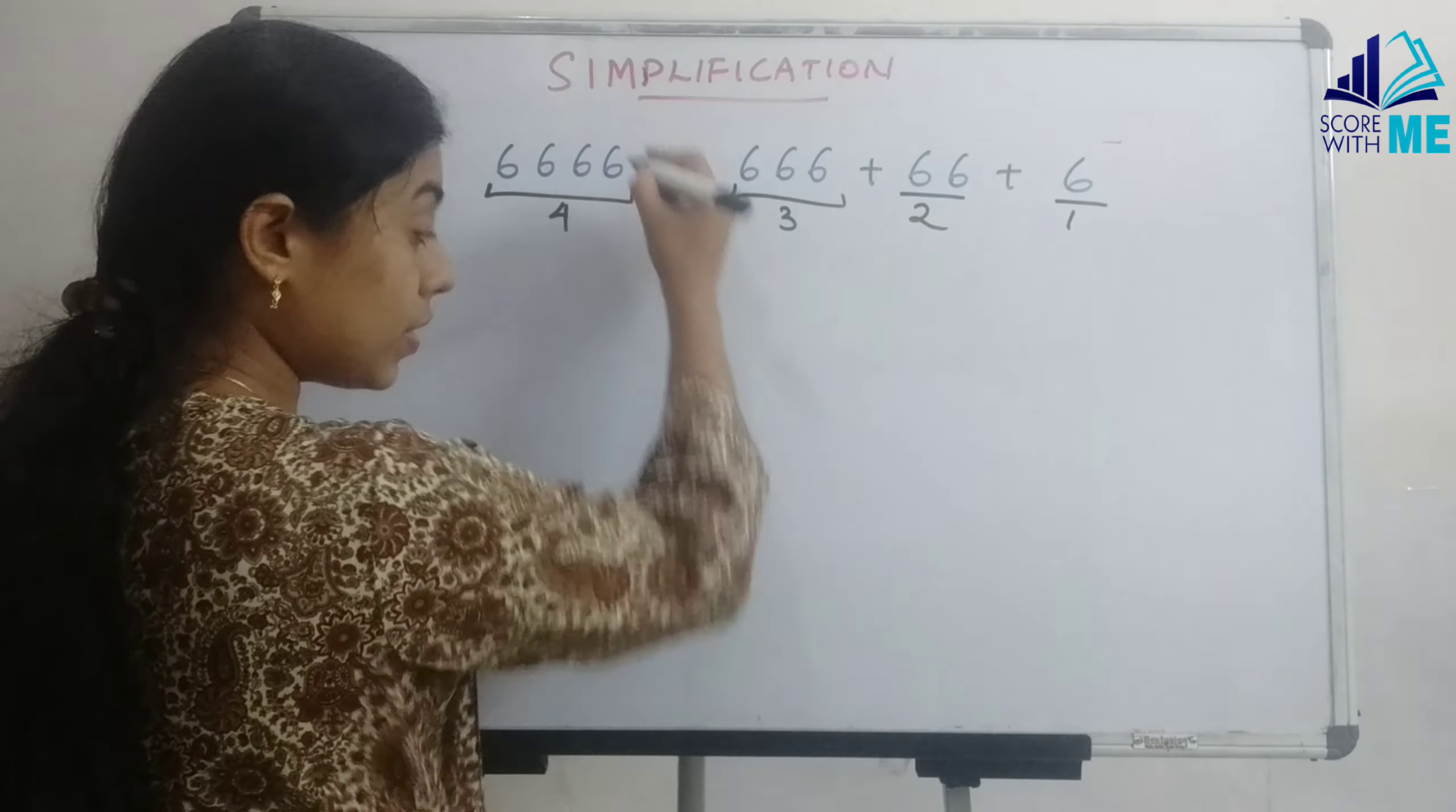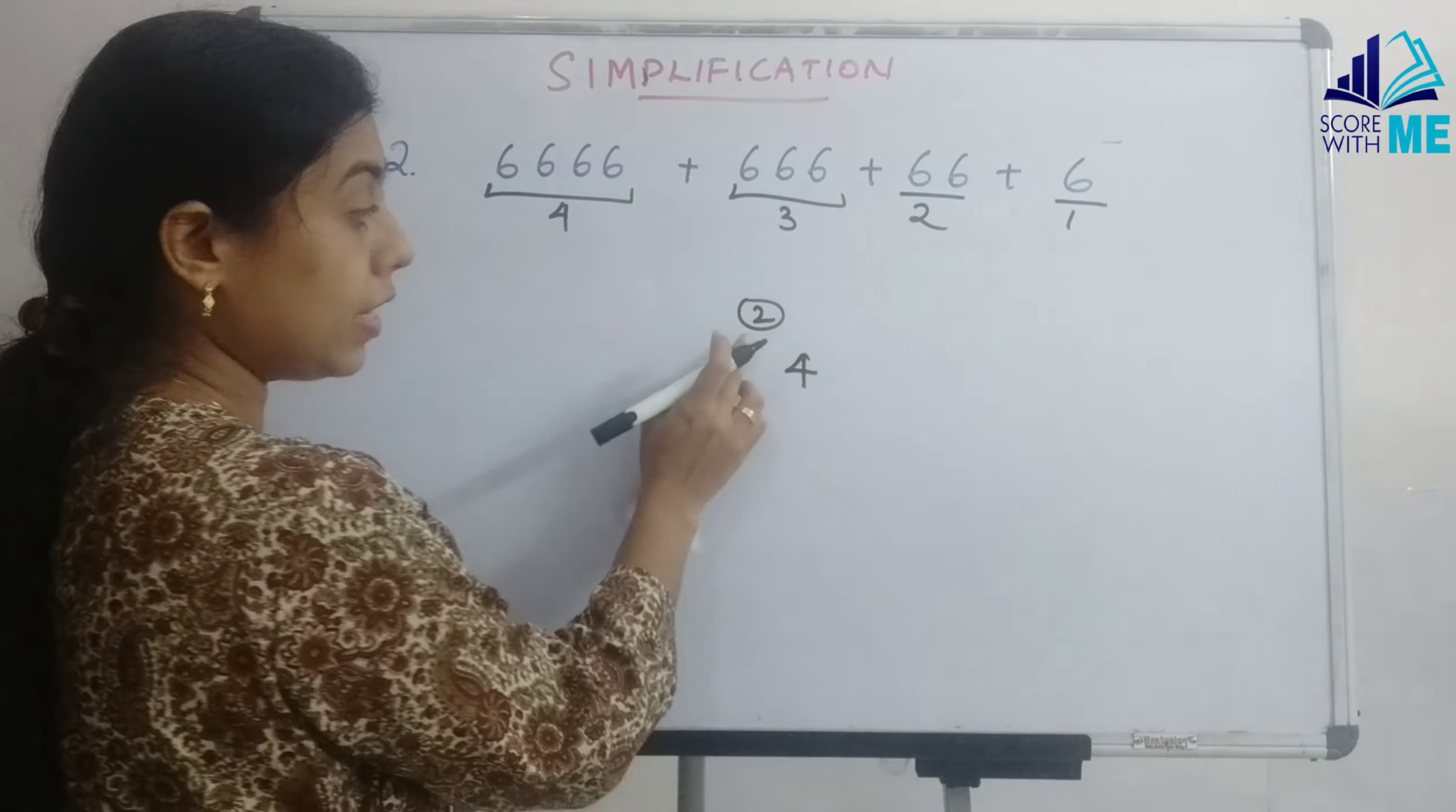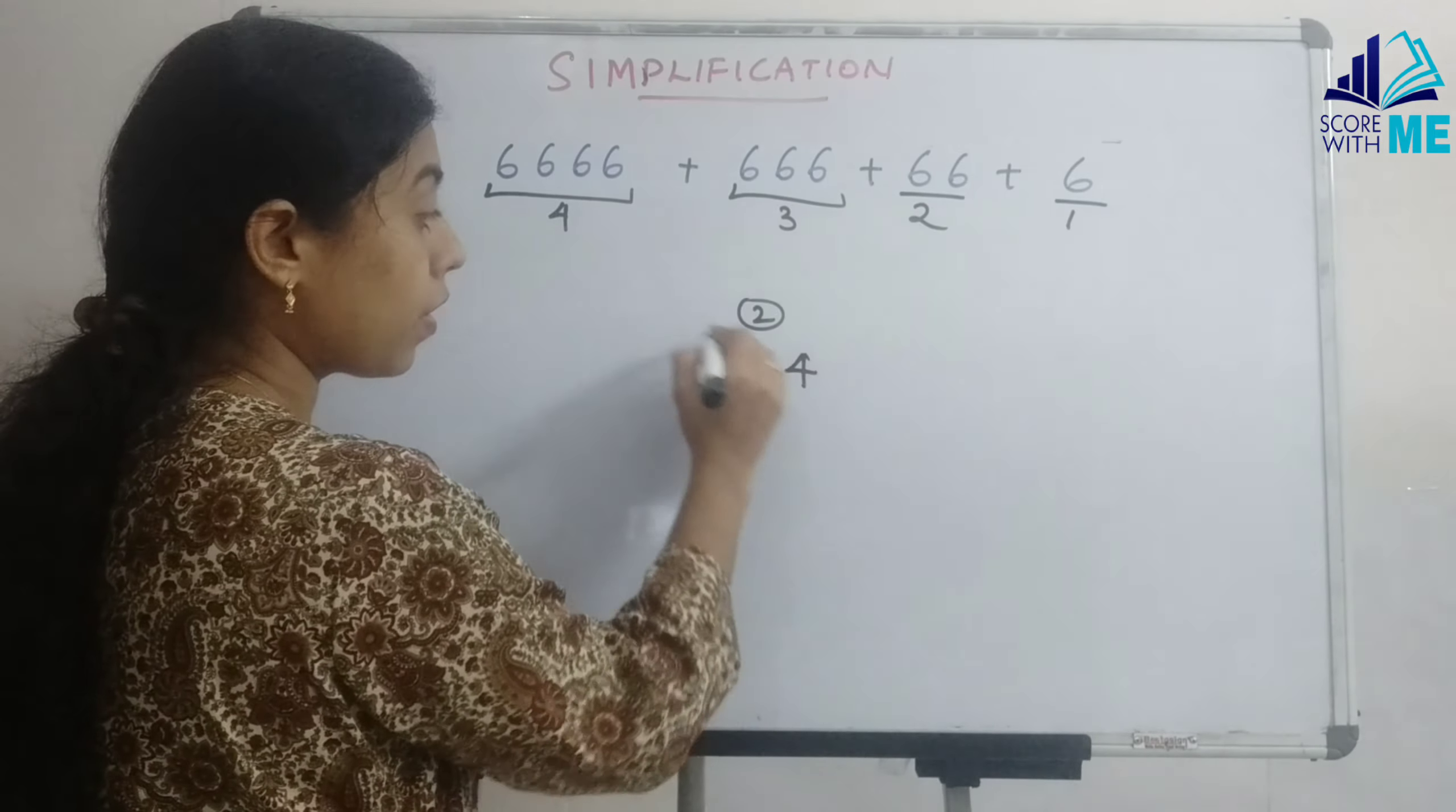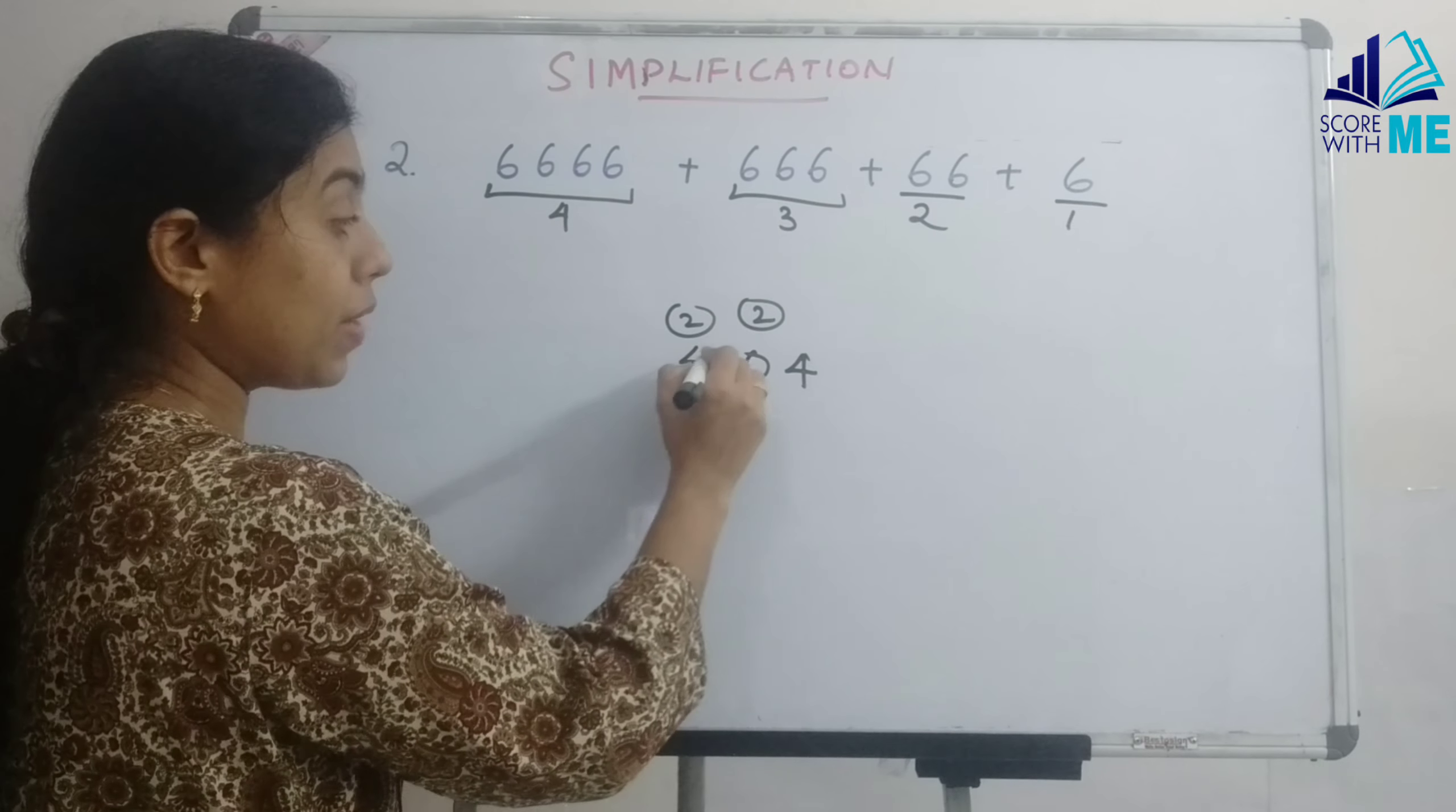Now we are multiplying 4 with the common number of 6. So 4 into 6 you get 24, carry 2. 3 times 6 is 18, carry 2, 18 plus 2 is 20. 2 over here, 6 into 2 is 12 carry 2, so it becomes 14.